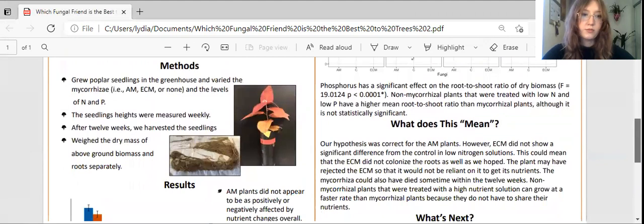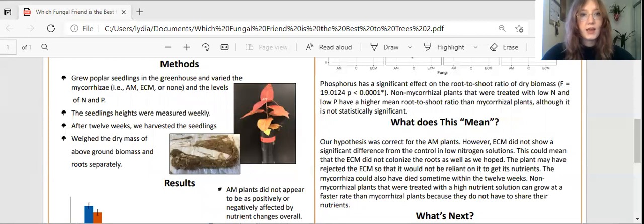To test this, we grew poplar seedlings in the greenhouse and inoculated some of them with AM or ECM and some were controls with no mycorrhiza. We also varied their nutrient levels. Some plants had high levels of nitrogen and phosphorus, some plants had low levels of nitrogen and phosphorus, and some had either low nitrogen and high phosphorus or high nitrogen and low phosphorus.